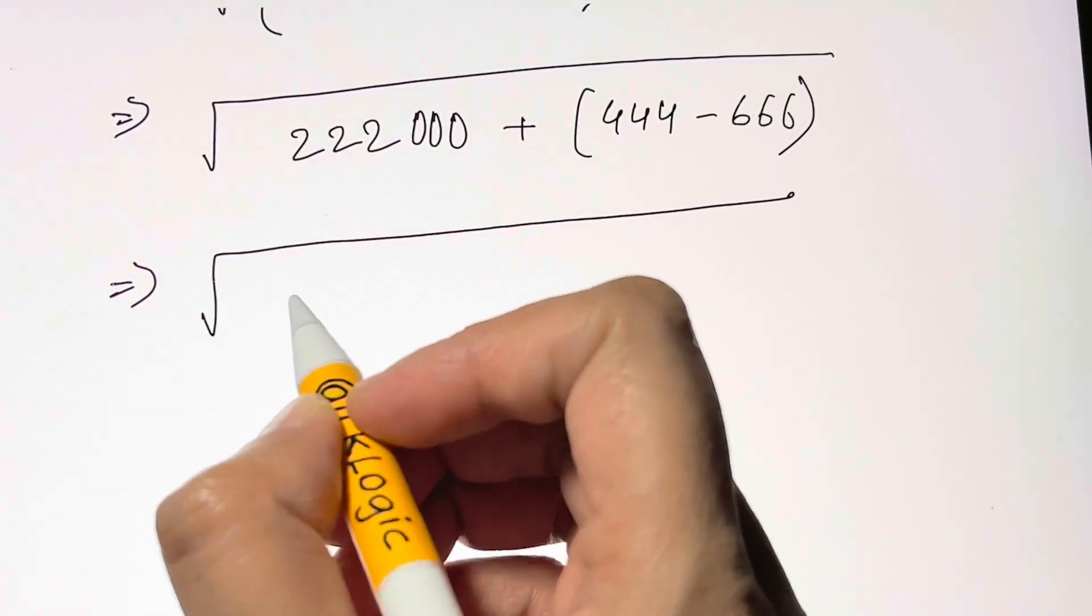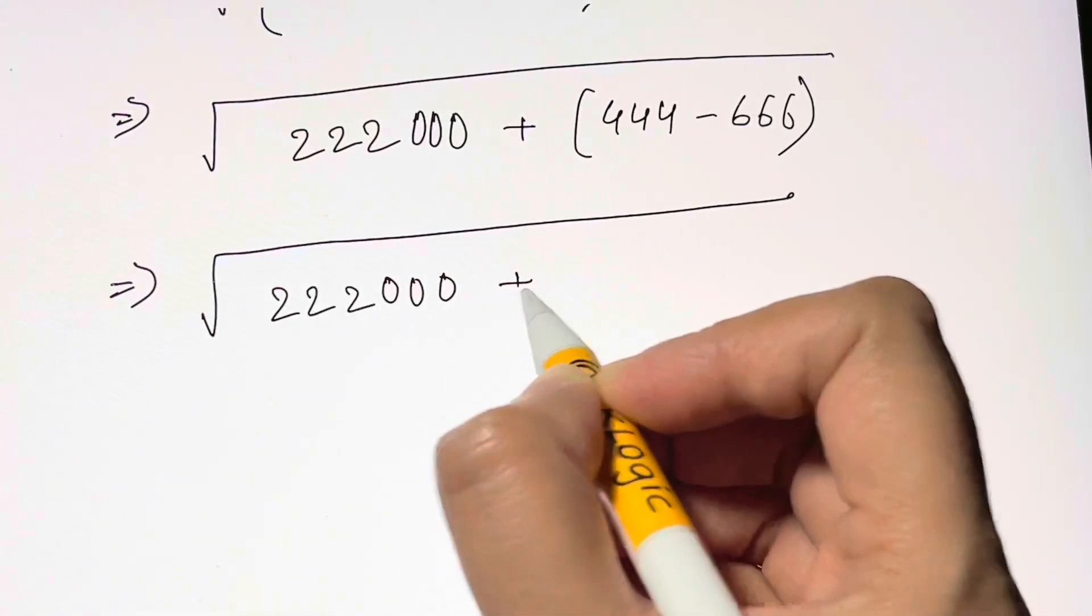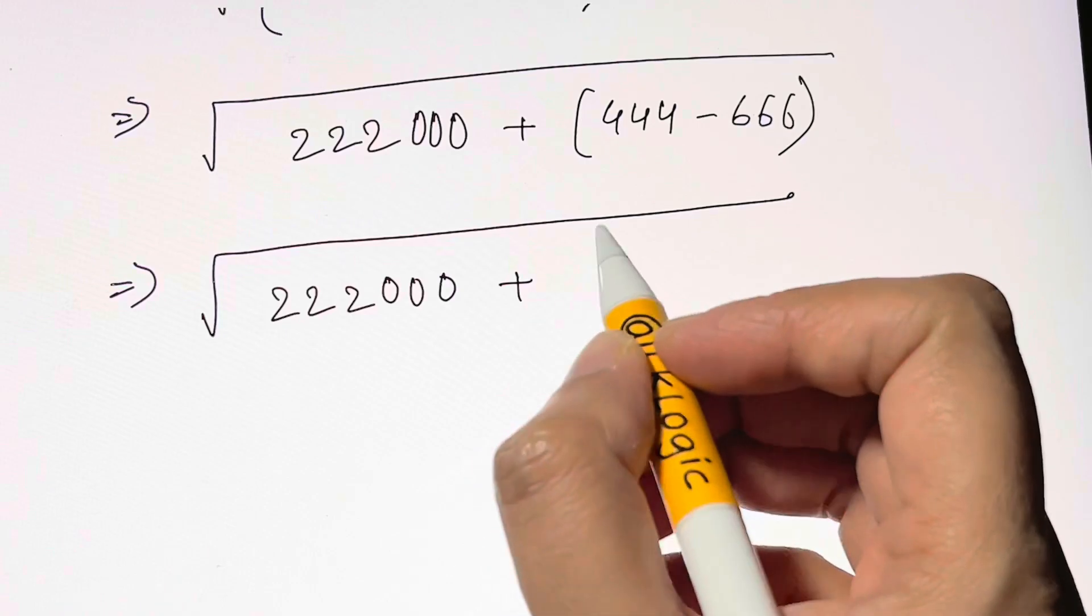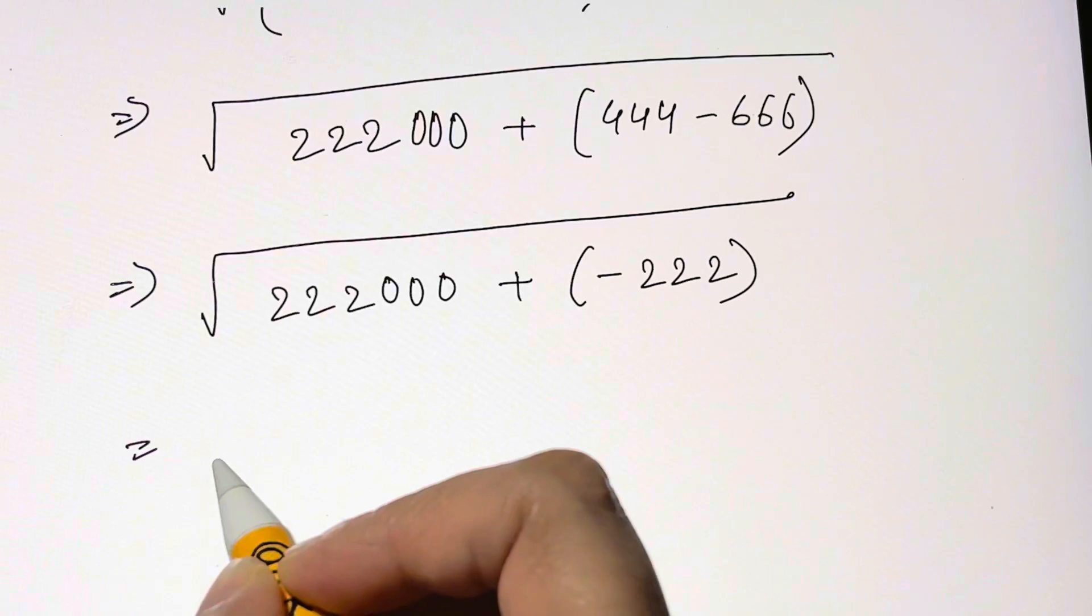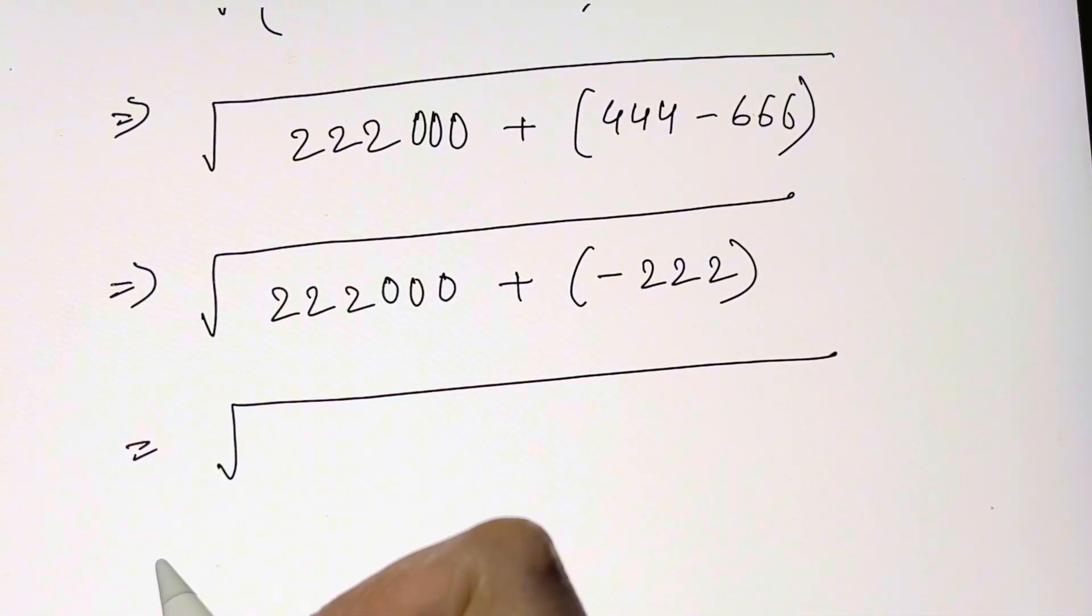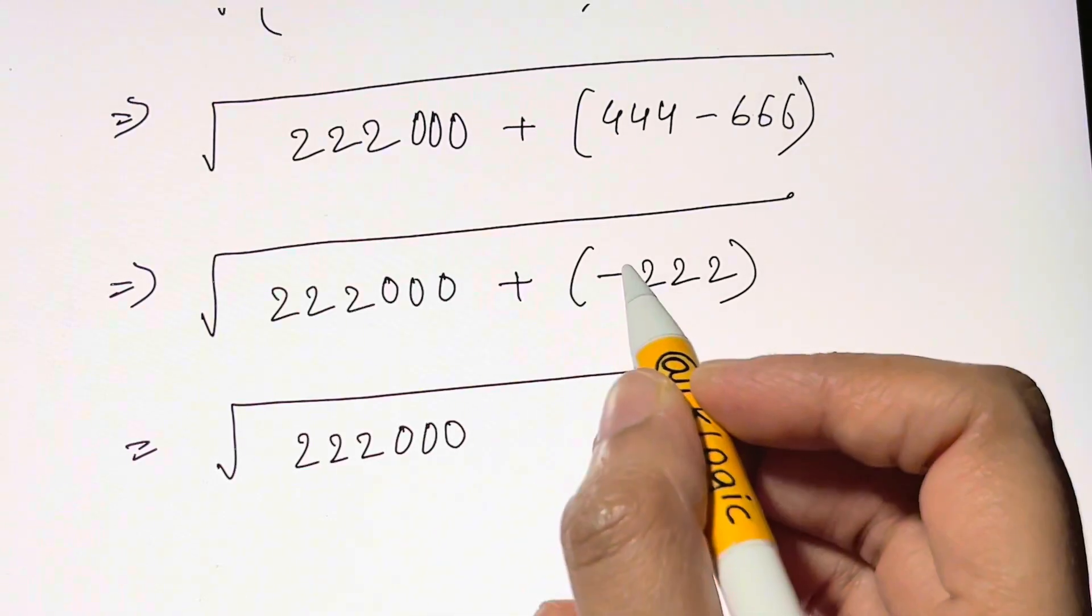Now in the next step, I'll have 222000. I'm going to subtract this. 444 minus 666 is minus 222. Then you have under the root of 222000, plus times minus is minus 222.